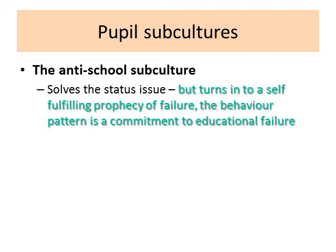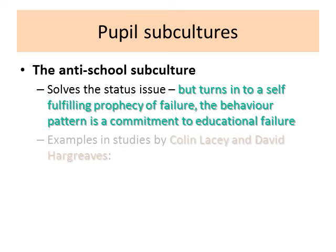This solves the status issue but turns into a self-fulfilling prophecy of failure. The behaviour pattern becomes a commitment to educational failure. Students gain status in an illegitimate way, but it leads to a self-fulfilling prophecy of educational underachievement.